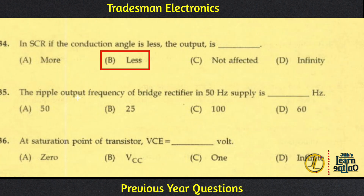The ripple output frequency of a bridge rectifier on a 50 Hz supply is 100 Hz. A bridge rectifier is a full wave rectifier. When rectifying a 50 Hz supply, both the negative and positive half cycles are rectified, so the ripple frequency is doubled to 100 Hz. For a half wave rectifier, the ripple frequency remains 50 Hz.